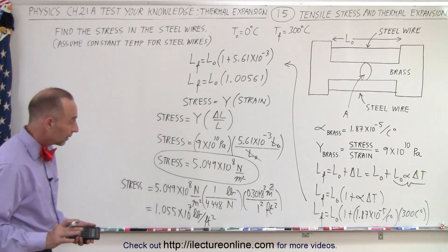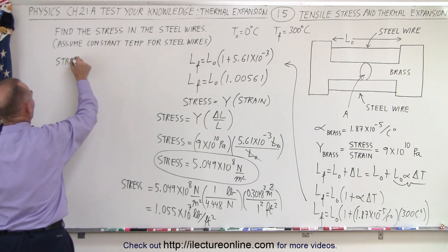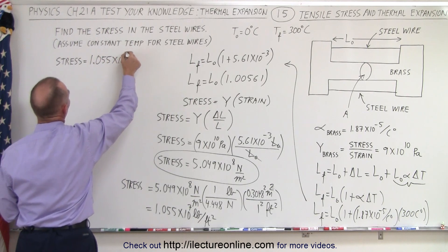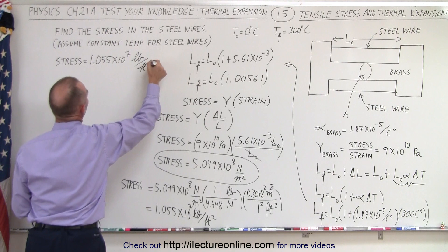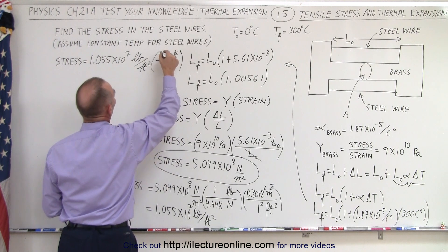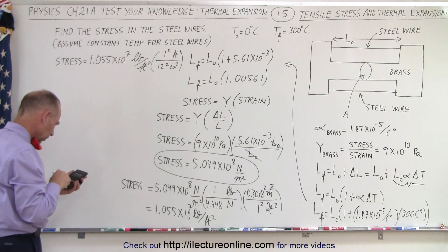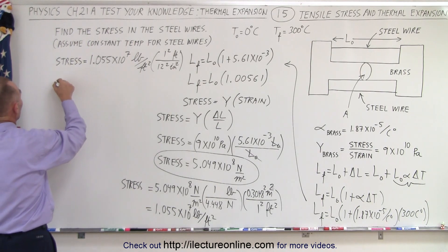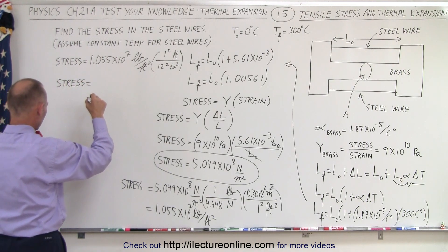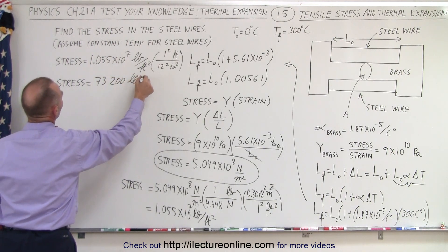Now typically we write it in terms of pounds per square inch. So let's go up here. So we have stress, which is equal to 1.055 times 10 to the 7 pounds per square foot. Now we're going to convert that to square inches. Of course, 1 foot is 12 inches, and now we have to square that. So 1 squared divided by 12 squared, so divide this by 144. So that means that the stress can also be expressed in terms of 73,200 pounds per square inch. And so there we go.